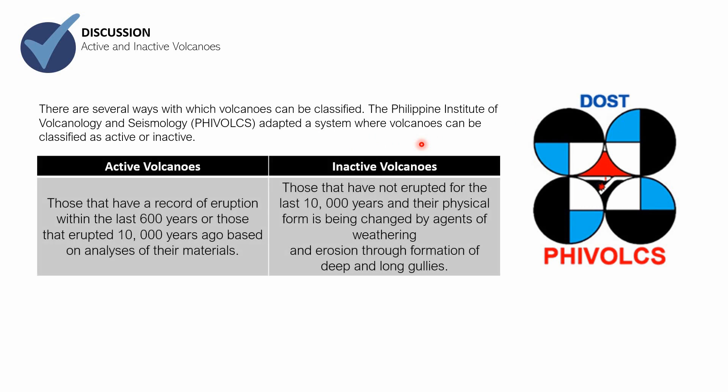How do they do that? Active volcanoes are volcanoes that have a record of eruption within the last 600 years, or those that erupted at around 10,000 years ago based on analysis of their materials. A historical record of eruption within 600 years qualifies a volcano as active. And based on analysis of extruded materials, eruptions within the last 10,000 years can also qualify a volcano as active.